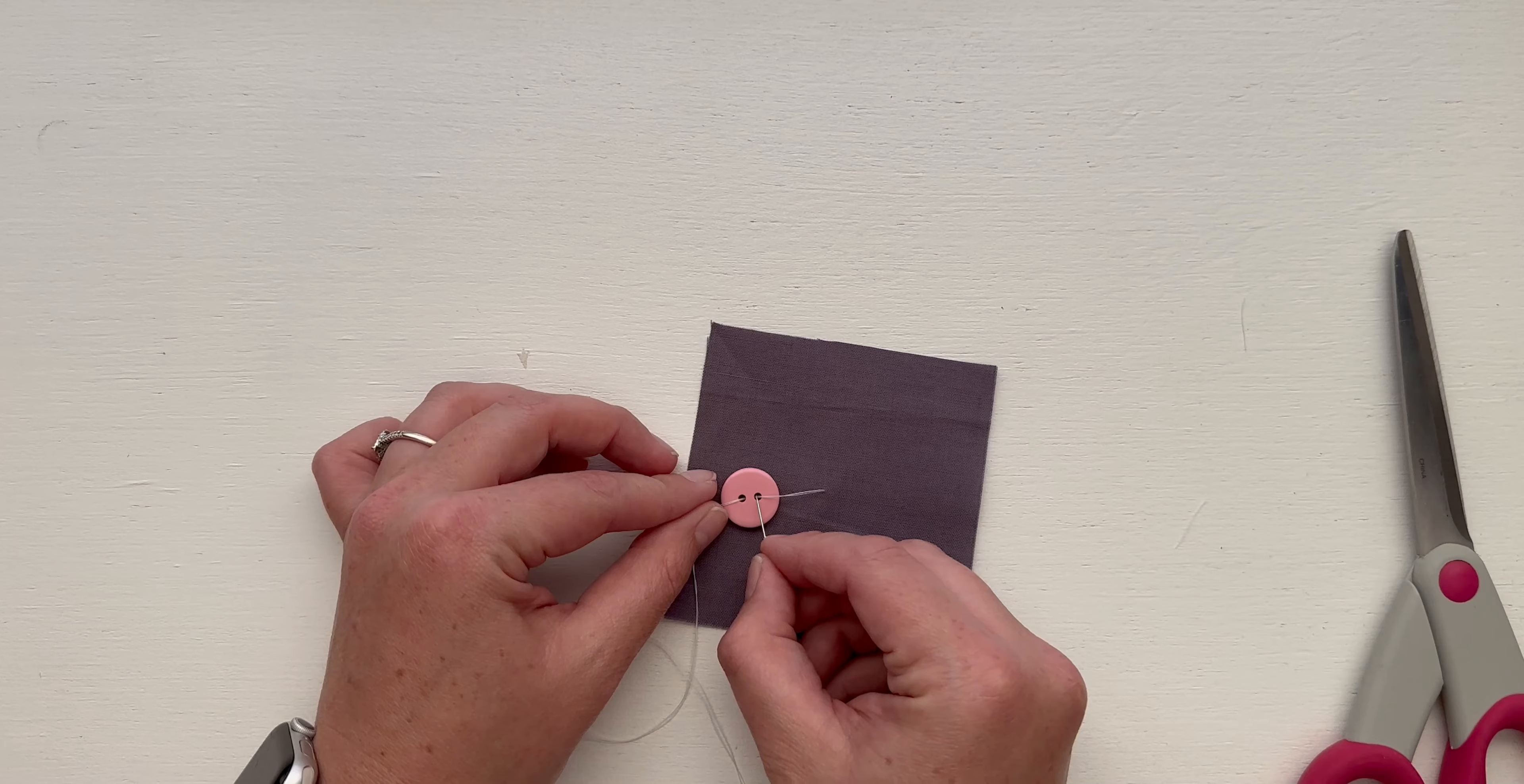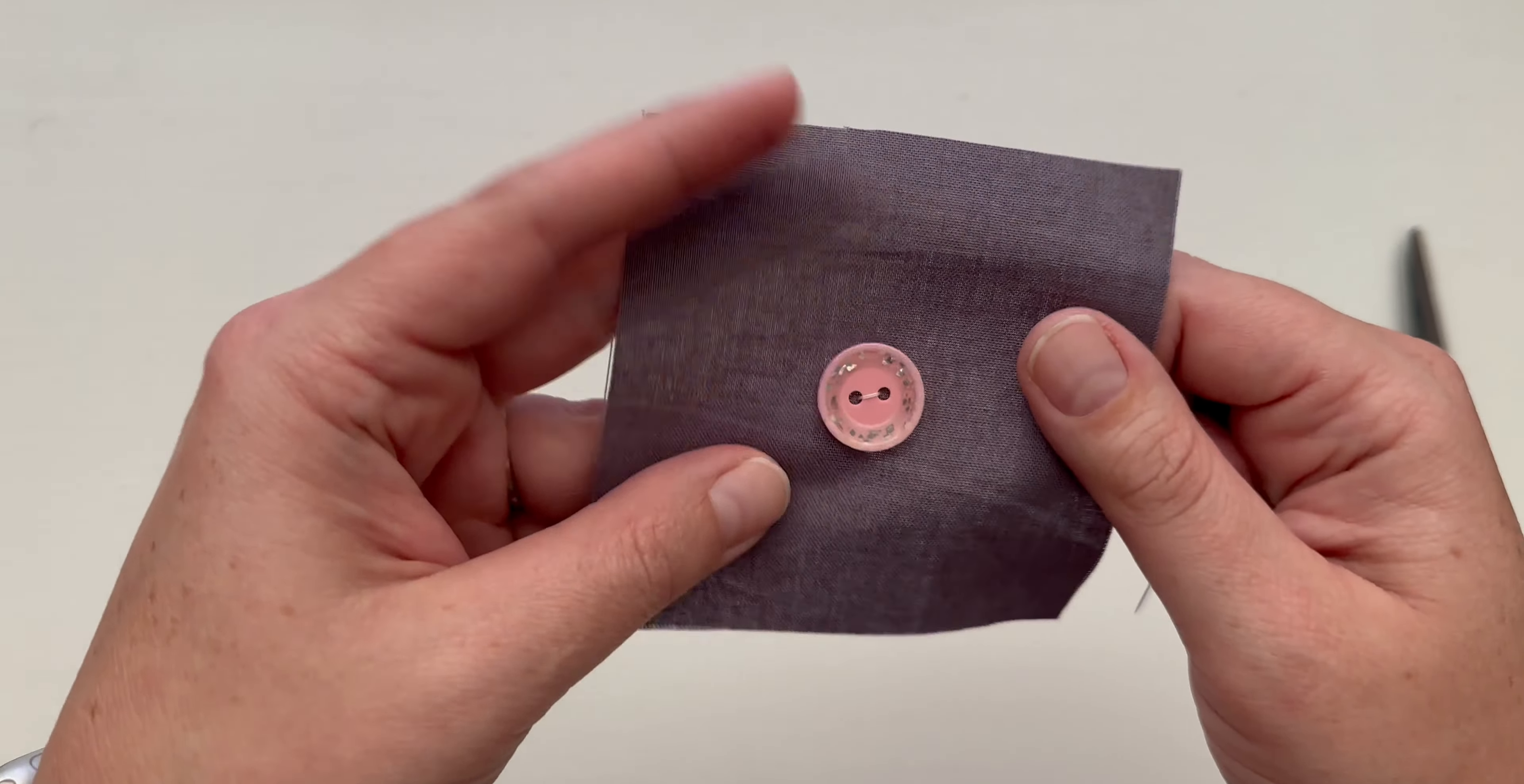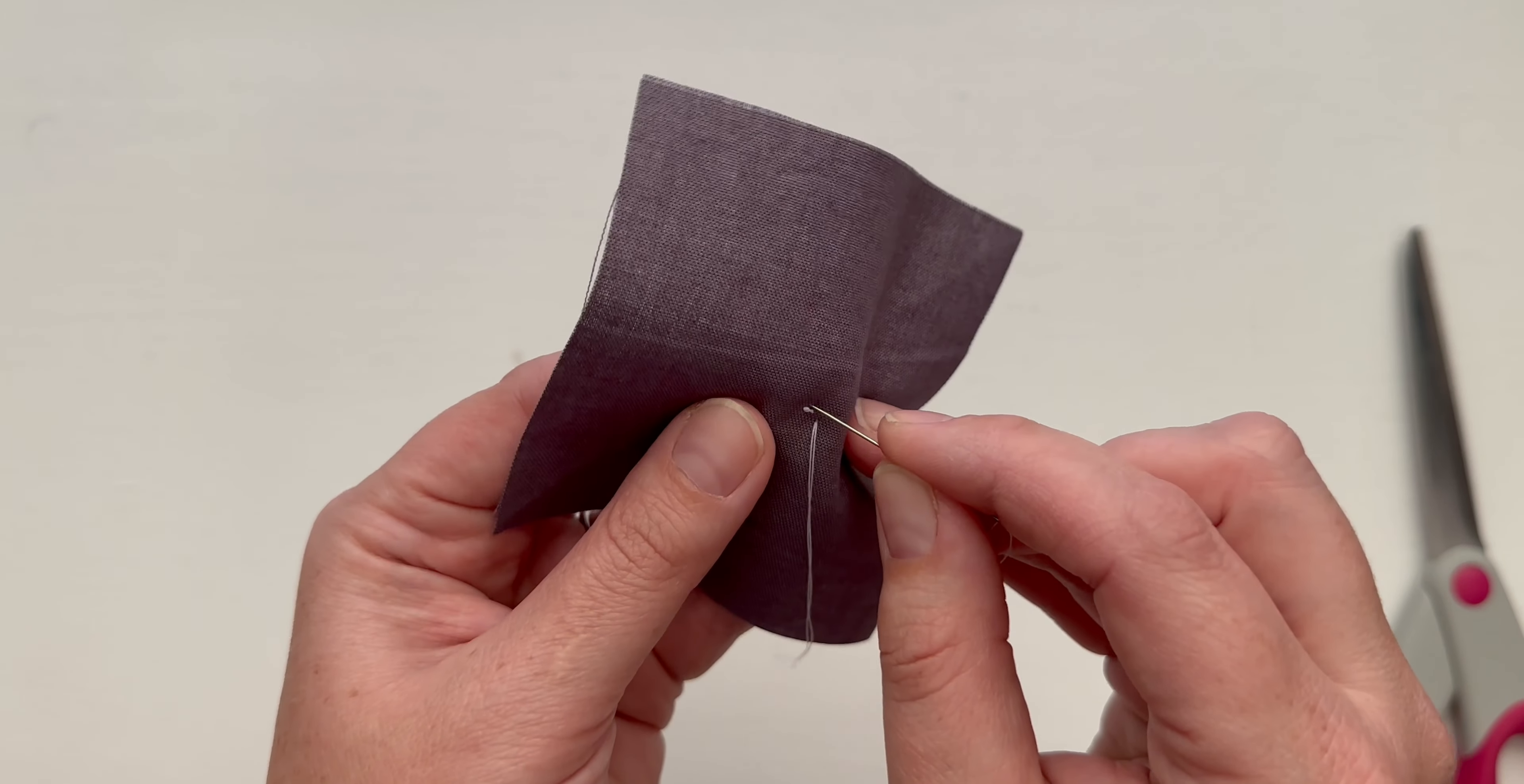Then I'm going to look to see how far apart these holes of the button are and I'm going to make my stitch about that far apart. Okay, so now I have secured my button with one stitch. We want to do a full loop around our button five times. Five is going to be kind of our magic number for the first couple of steps.